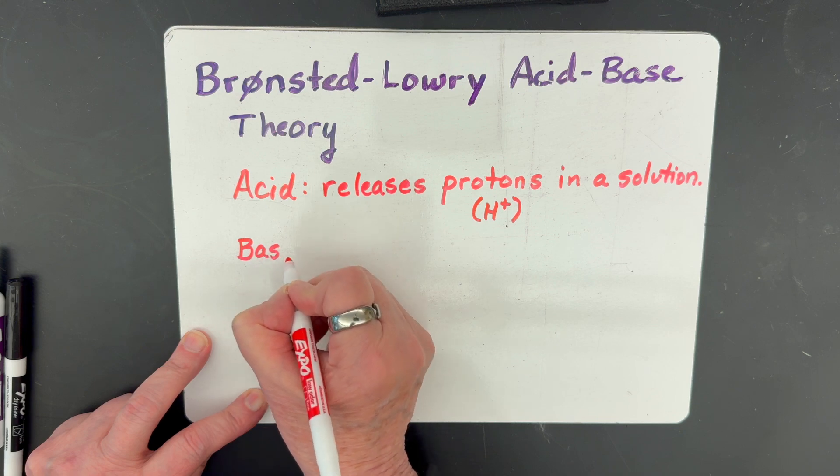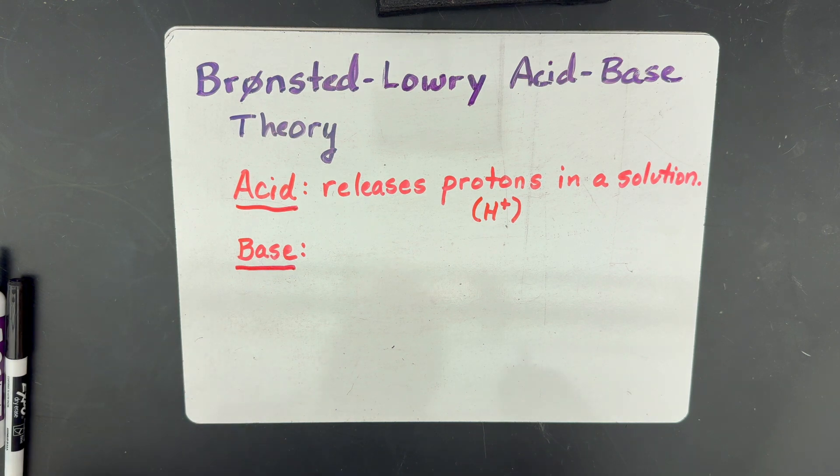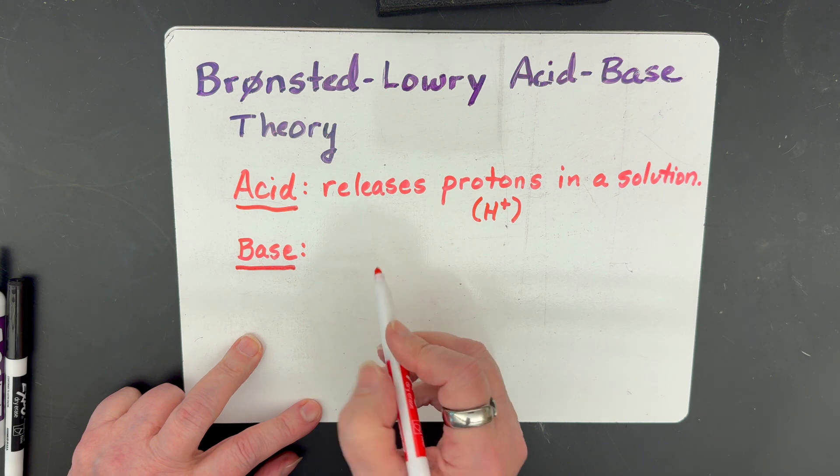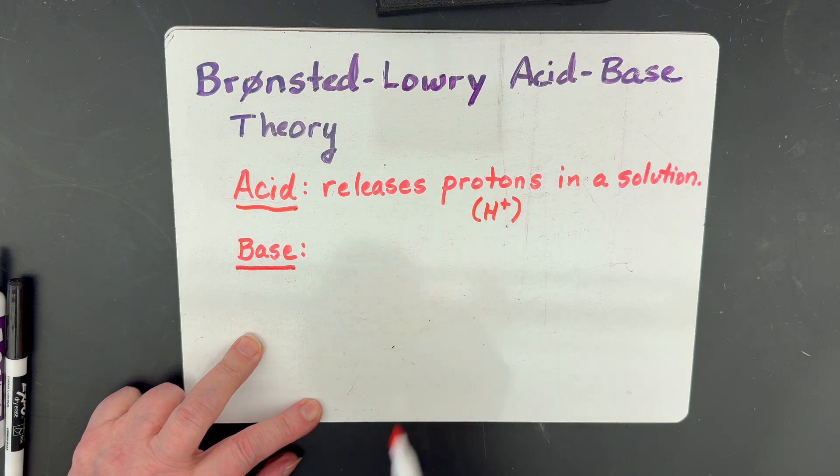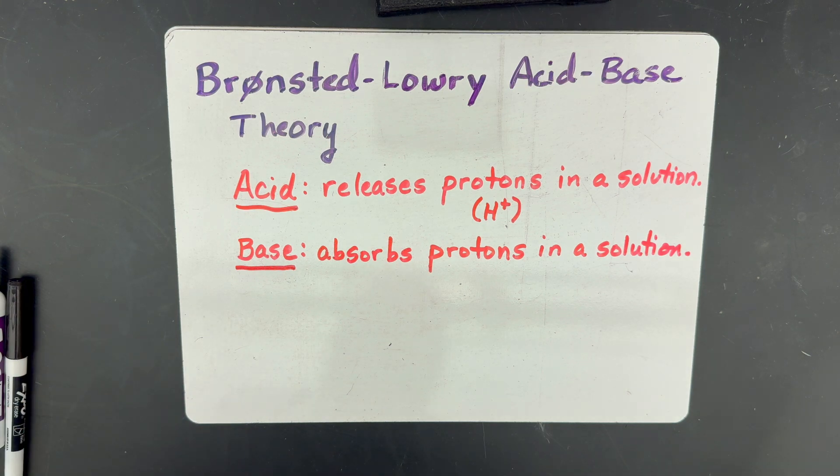The difference comes with the base. Because they found some bases that did not contain hydroxide but were able to neutralize acids, they defined a base as something that could absorb those protons in a solution. In other words, it attaches those protons, those hydrogen ions, and takes them out of the solution so that they're not free to make it acidic. So you can kind of think of a base as sort of like a sponge that absorbs those protons.